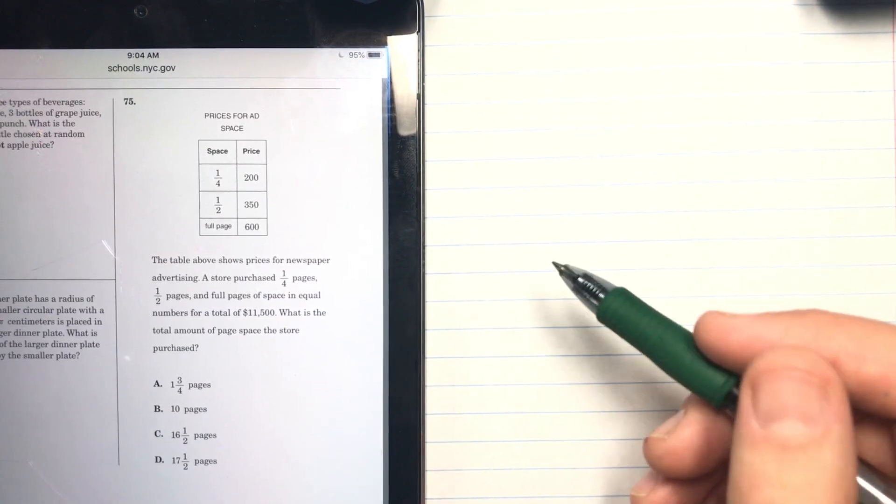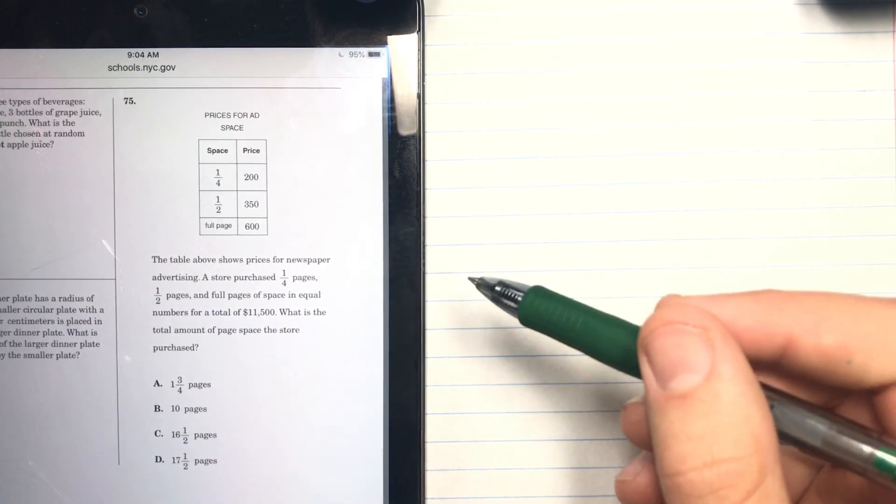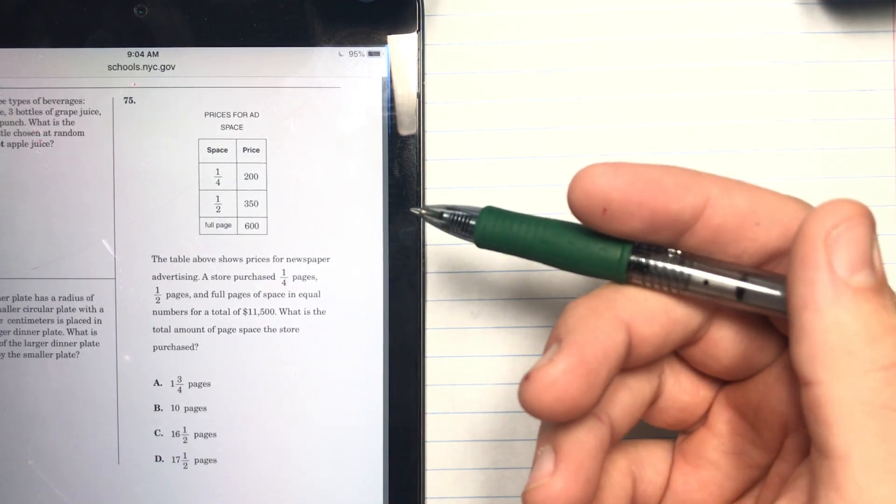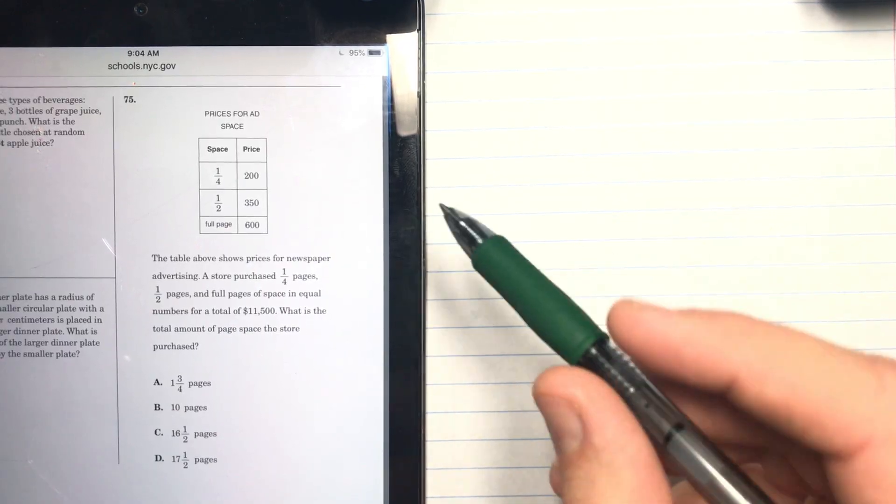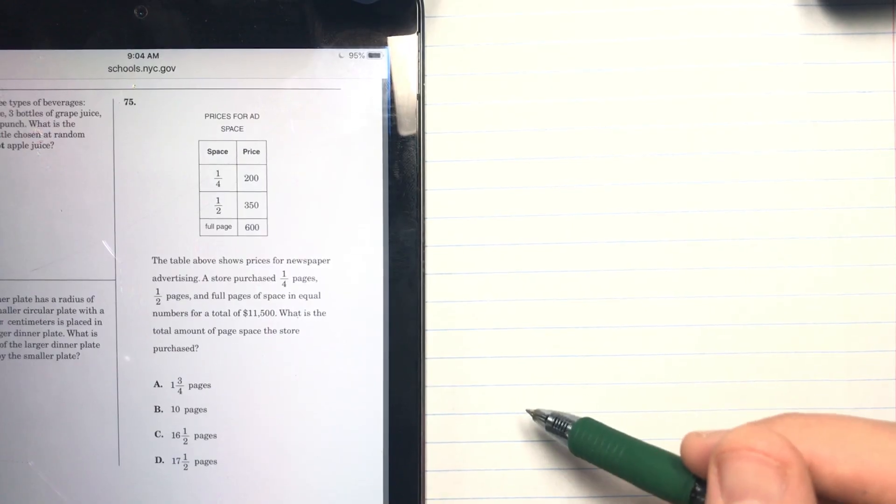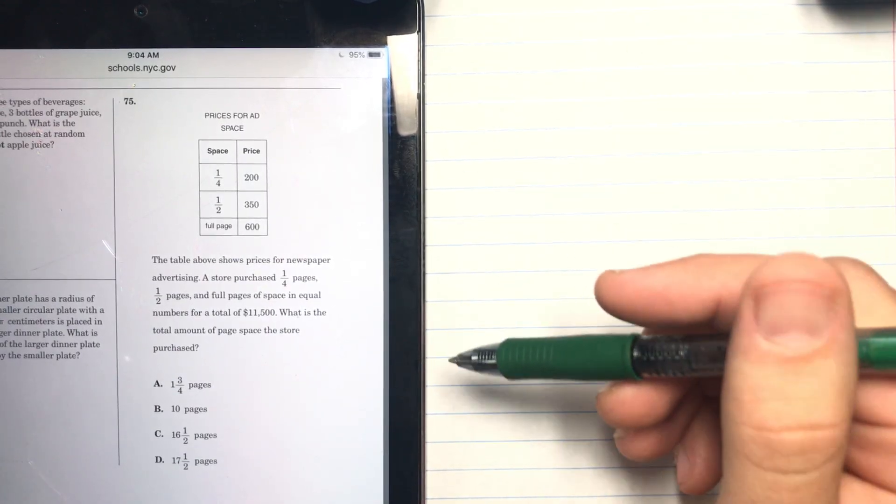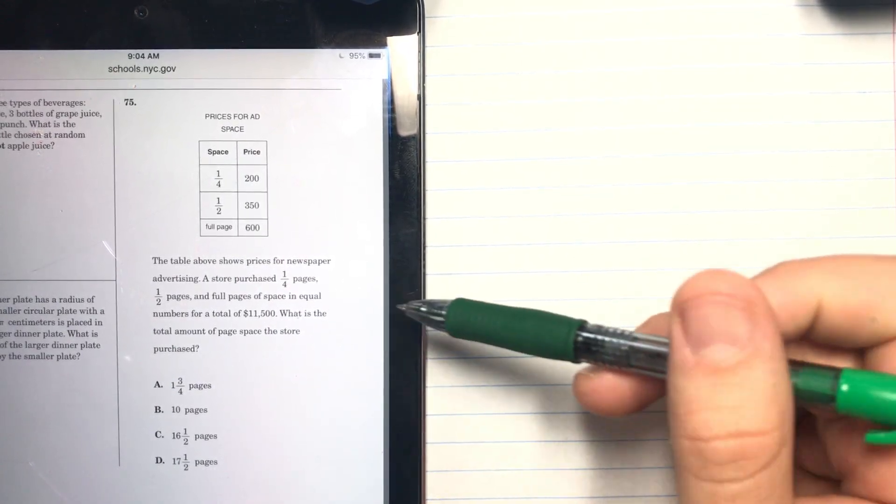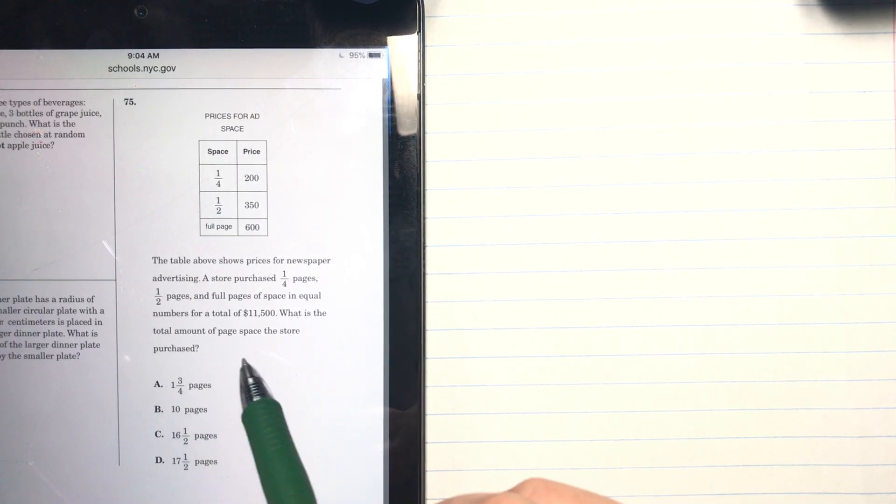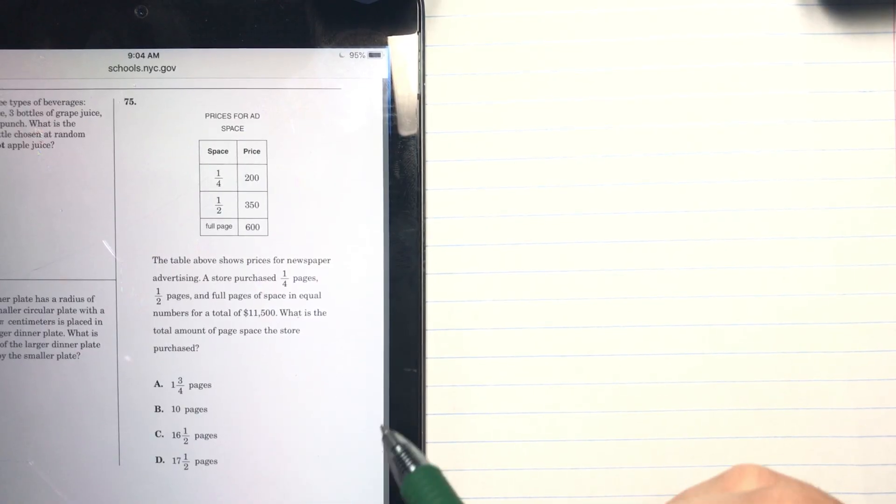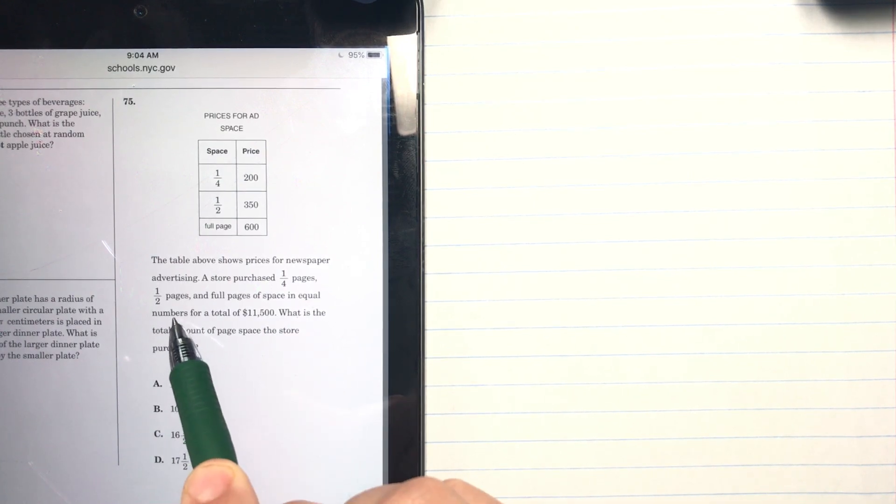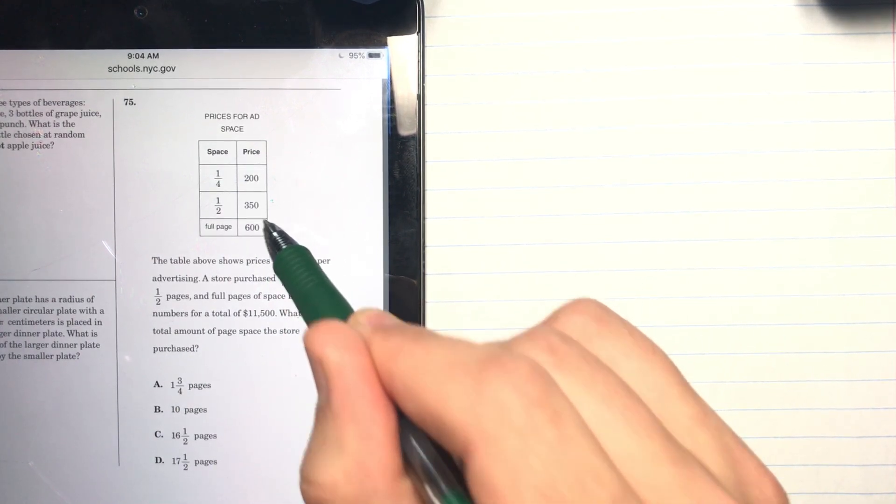This proved a little tricky while I was going through it for the first time, so I'm going to show you how to do it. We got a table for prices for ad space. The table above shows prices for newspaper advertising. A store purchased fourth pages, half pages, and full pages of space in equal numbers for a total of $11,500. What is the total amount of page space the store purchased? The big thing here is that they bought the page space in equal numbers.